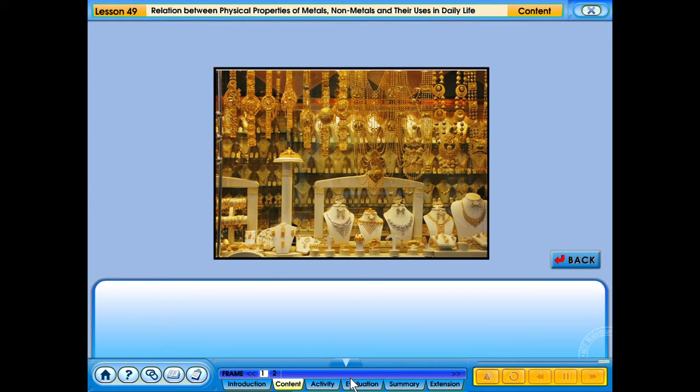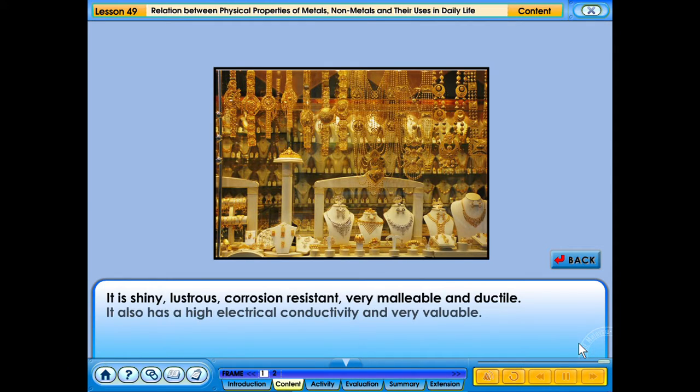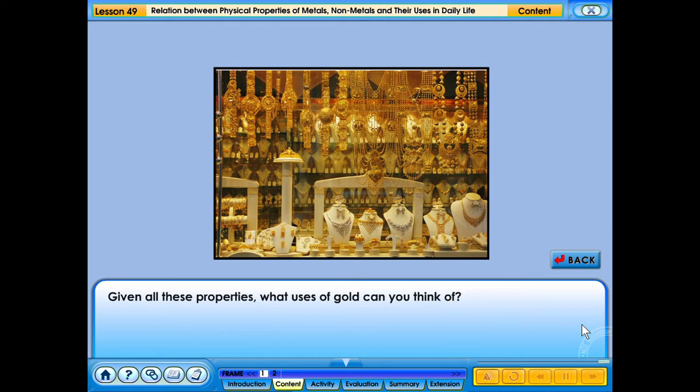Uses of gold in daily life. Gold or aurum is the most precious of all metals. It is shiny, lustrous, corrosion resistant, very malleable and ductile. It also has a high electrical conductivity and is very valuable. Given all these properties, what uses of gold can you think of? Click the check button to find out.